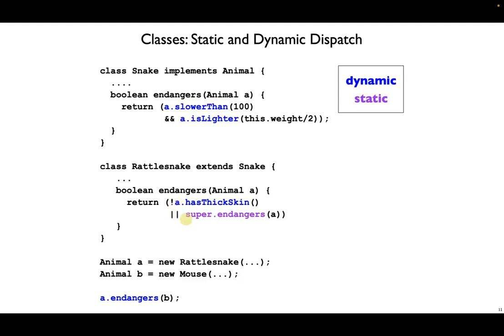But on the other hand, the super call is written in purple, because this one could be a static lookup. We know that since we're inside the rattlesnake class, and because rattlesnake extends snake, super refers to snake. So the endangers method that we want for this call is exactly the endangers method up above inside snake.